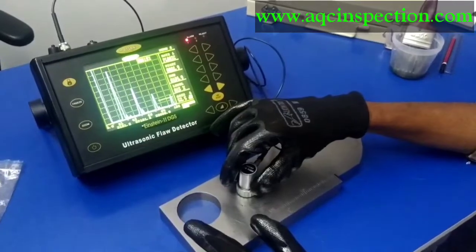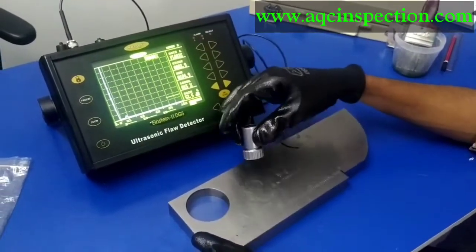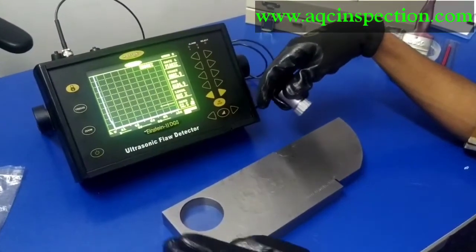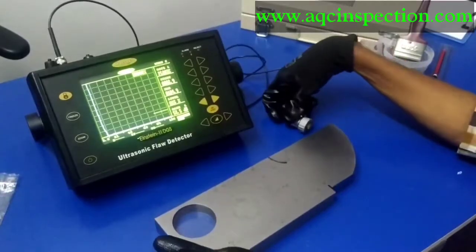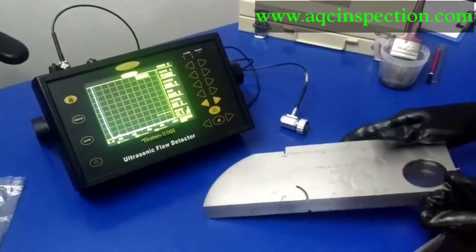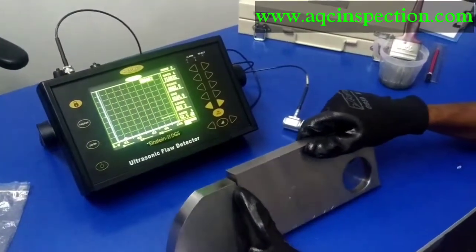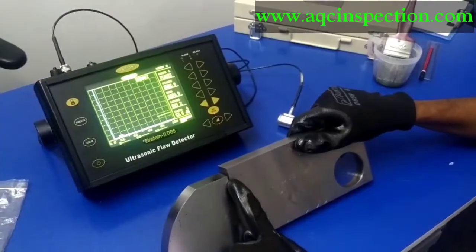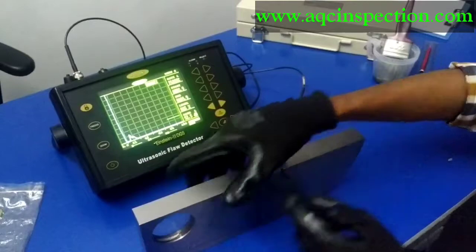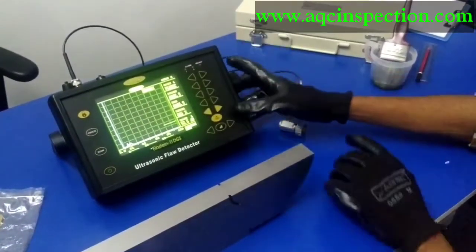This is the normal calibration using a V1 block but there are several steps to it like checking the vertical linearity, resolution, sensitivity and so on. So let me do the resolution check right now. Which is, as you can see, this is the notch right here, 5 mm gap. So I am going to be placing the transducer on top of here, right here to get this signal in my screen.